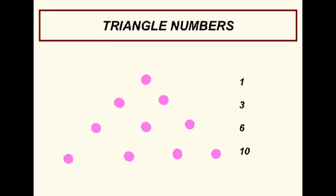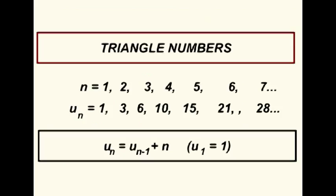If we arrange a triangle of dots in this way, it will generate the triangle numbers. Alternatively, each triangle number is the sum of the previous triangle number and the present natural number.